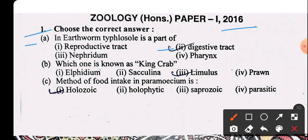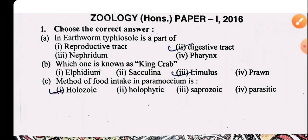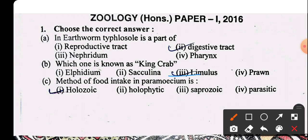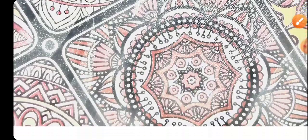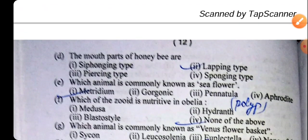Which one is known as king crab? King crab is also known as Limulus. Limulus is also known as king crab. The method of food intake in Paramecium is holozoic mode of nutrition — that will be the right answer.